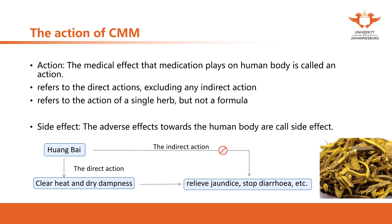What do they mean? For example, there is an herb called Huang Bai. This is the name of the herb and this is the image of the herb. Huang Bai has the function of clearing heat and drying dampness. When we study diagnostics and basic theory, we know that one type of jaundice and one type of diarrhea may be due to dampness and heat. So Huang Bai can be used to relieve jaundice or stop diarrhea due to dampness and heat, because Huang Bai can clear heat and dry dampness.